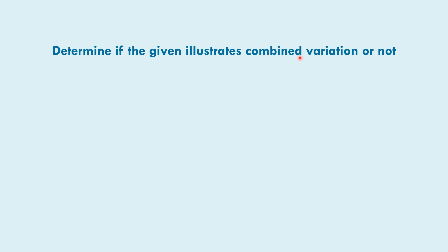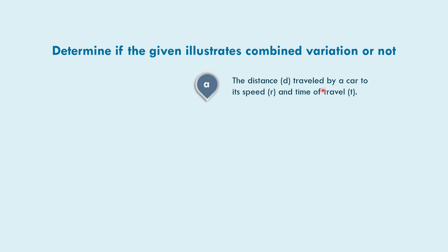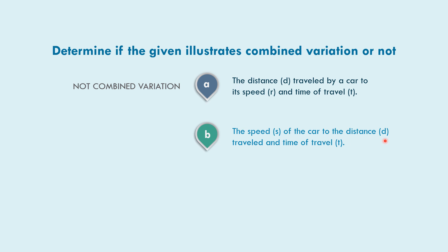Let us determine if the given illustrates combined variation or not. Example a: the distance d traveled by a car depends on its speed r and time of travel t. This example is not combined variation. Example b: the speed s of the car depends on the distance d traveled and time of travel t. The formula is s equals d over time, which has a denominator, so this example is combined variation.